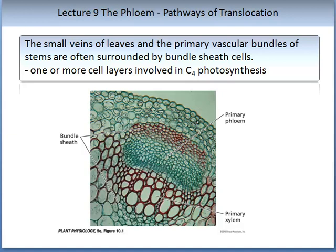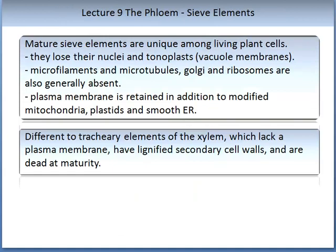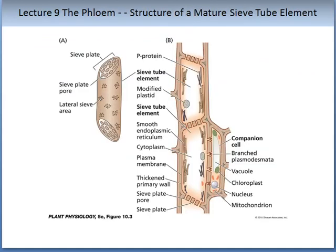Mature sieve elements are unique among living cells. They lose their nuclei, tonoplast, and vacuole membranes. Their microfilaments, microtubules, Golgi apparatus and ribosomes are also generally absent. The plasma membrane is retained, in addition to modified mitochondria, plastids and smooth endoplasmic reticulum. This is different from tracheary elements of the xylem, which lack the plasma membrane, have lignified secondary cell walls and are dead at maturity. The figure on the slide illustrates the structure of a mature sieve tube element, drawing attention to the sieve plates, sieve plate pores and lateral sieve areas.